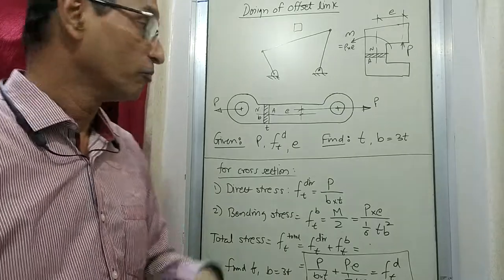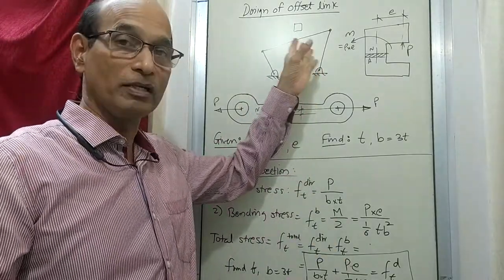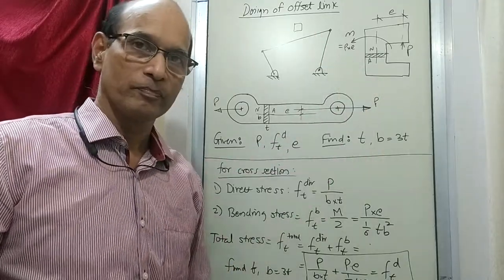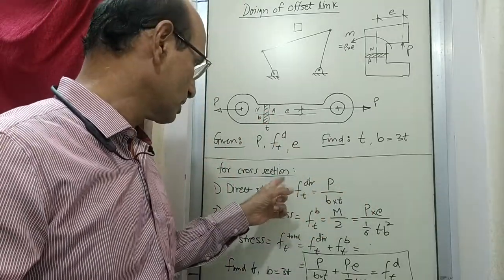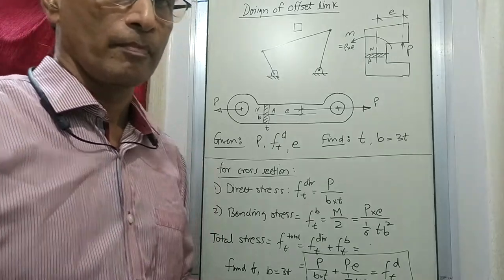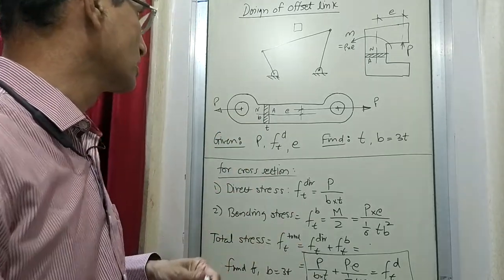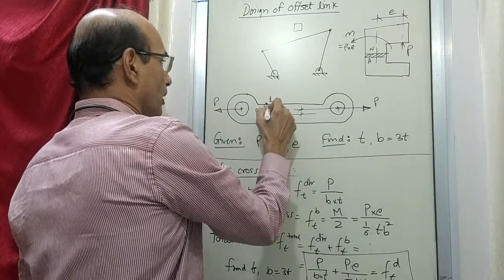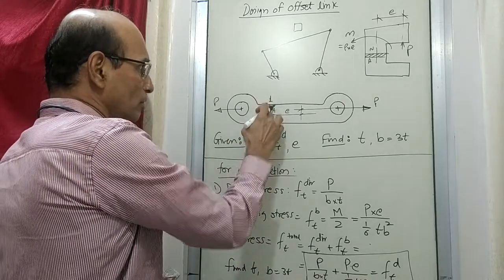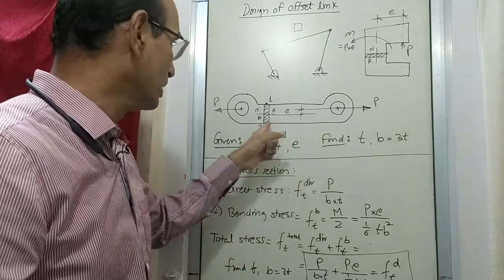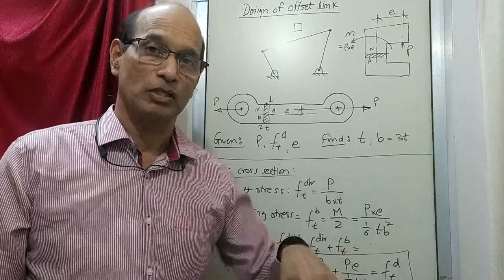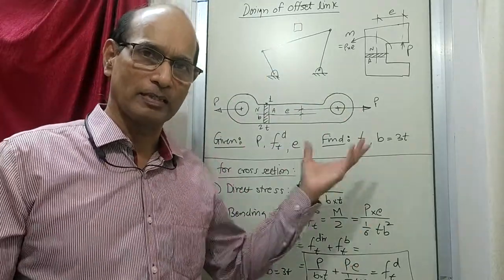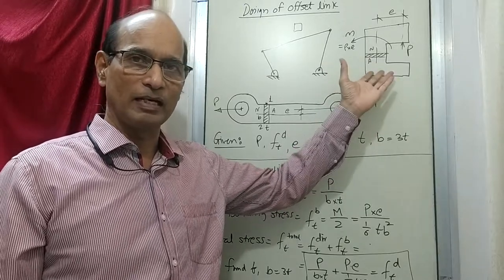So we have found out the cross section for an offset link, and we have also seen why it is like this and what is the reason for a link to be made as an offset link. We saw that this case is similar to a C-frame. Therefore the same principle is applied - the section experiences direct stress and bending stress. Now this stress we are talking about exists at which place? Because of the eccentricity, it is going to bend. So there is point 1 on the outside and point 2 on the inside. At point 2, direct stress will be tensile and bending stress will be compressive, so the effect will be nullified and compressive stress is always much safer. Therefore we are talking about everything at point 1.